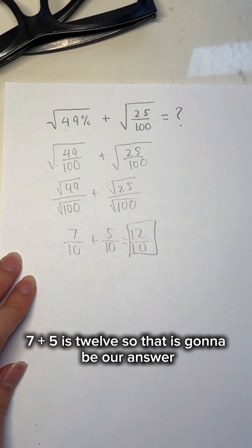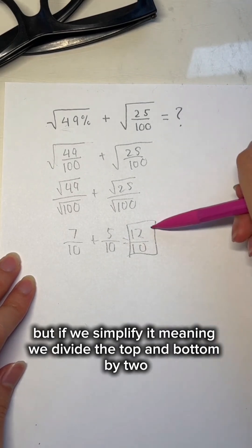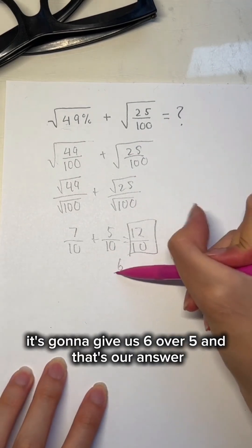So that is going to be our answer. But if we simplify it, meaning we divide the top and bottom by 2, it's going to give us 6 over 5. And that's our answer.